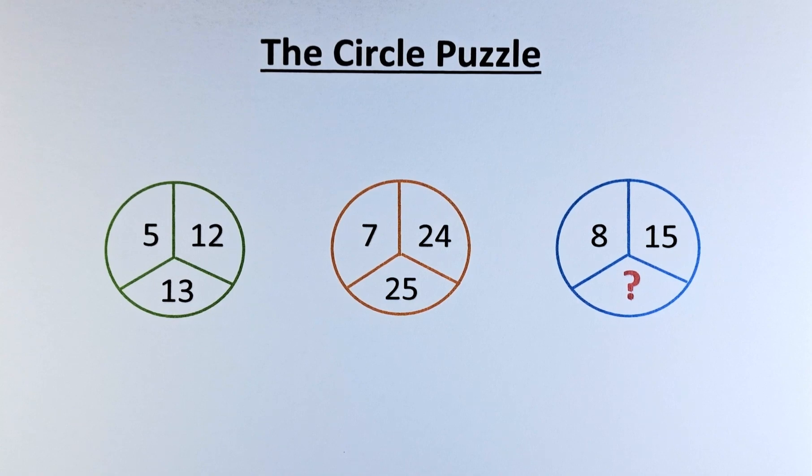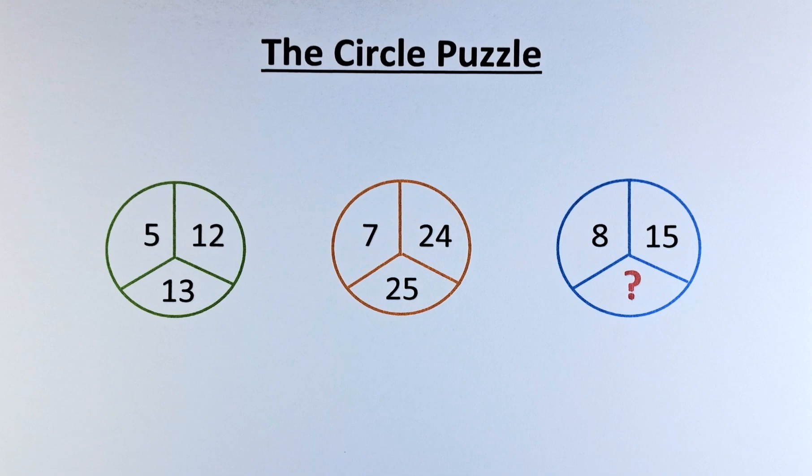There are three circles in front of us. In the first circle, the numbers are 5, 12, and 13. In the second circle, we have 7, 24, and 25. And in the last circle, we have 8, 15, and a question mark.